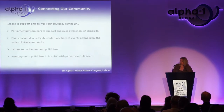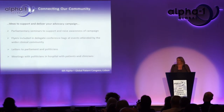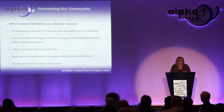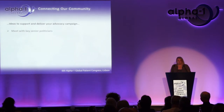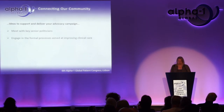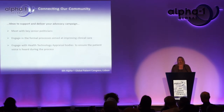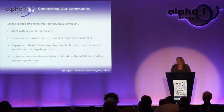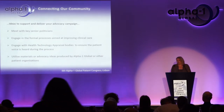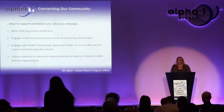You can have meetings with politicians in hospitals and include your clinicians. You could create online petitions to support your cause, which you can then deliver to parliament. You can meet with senior politicians and get patients to do it as well. Engage in the formal processes aimed at improving clinical care—that's probably one of the most important things you can do. Engage with health technology appraisal bodies to ensure the patient voice is heard. Utilize materials or advocacy ideas produced by Alpha One Global or other alpha patient organizations—speak to each other and find out what you're doing.